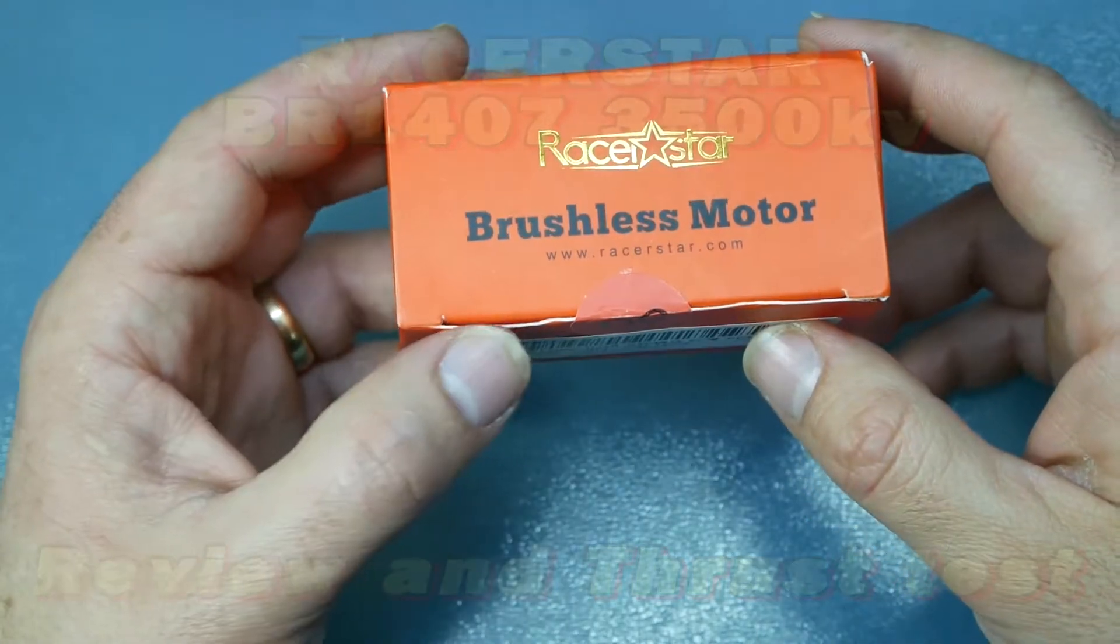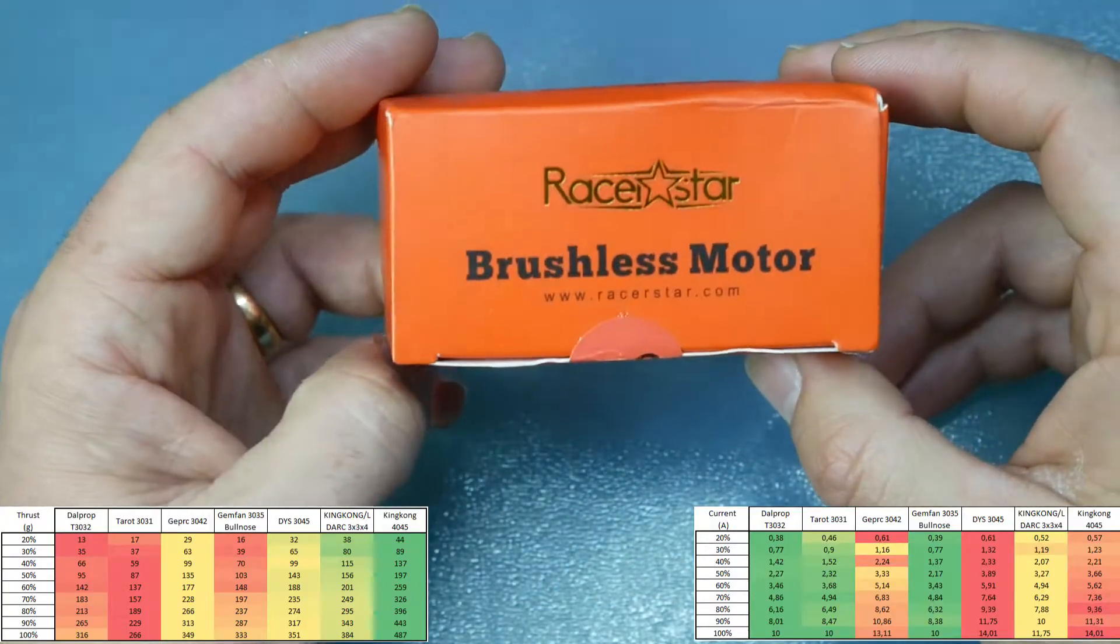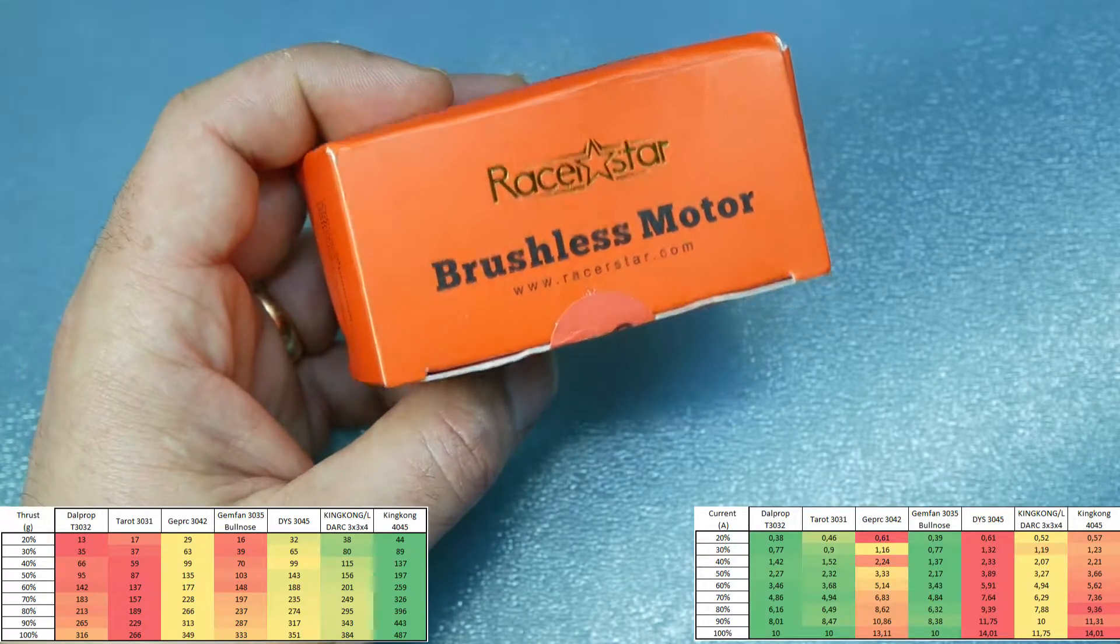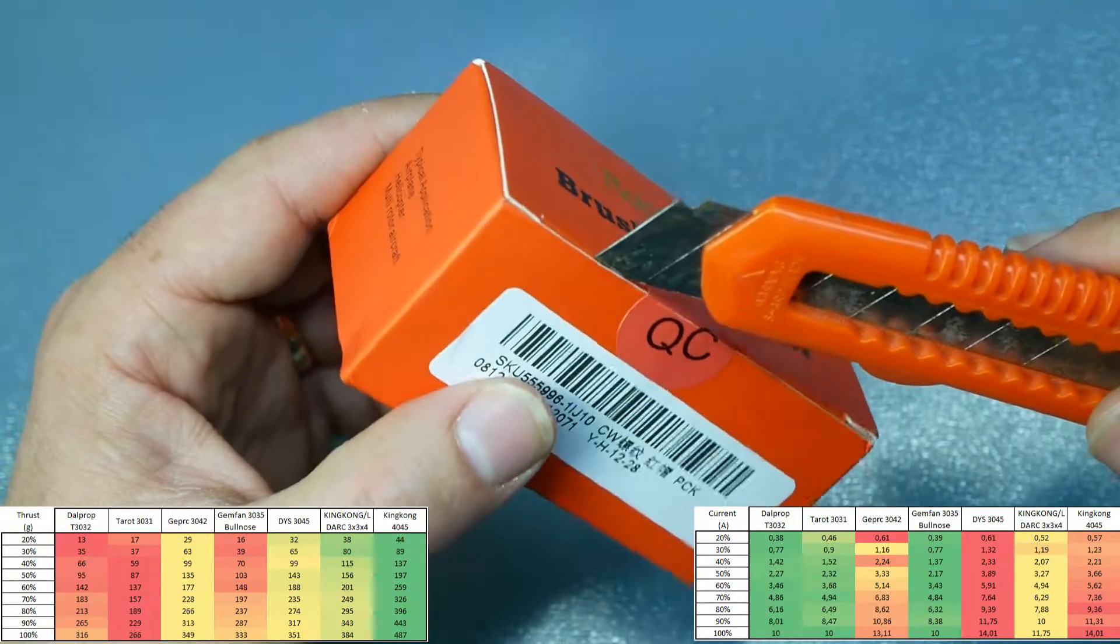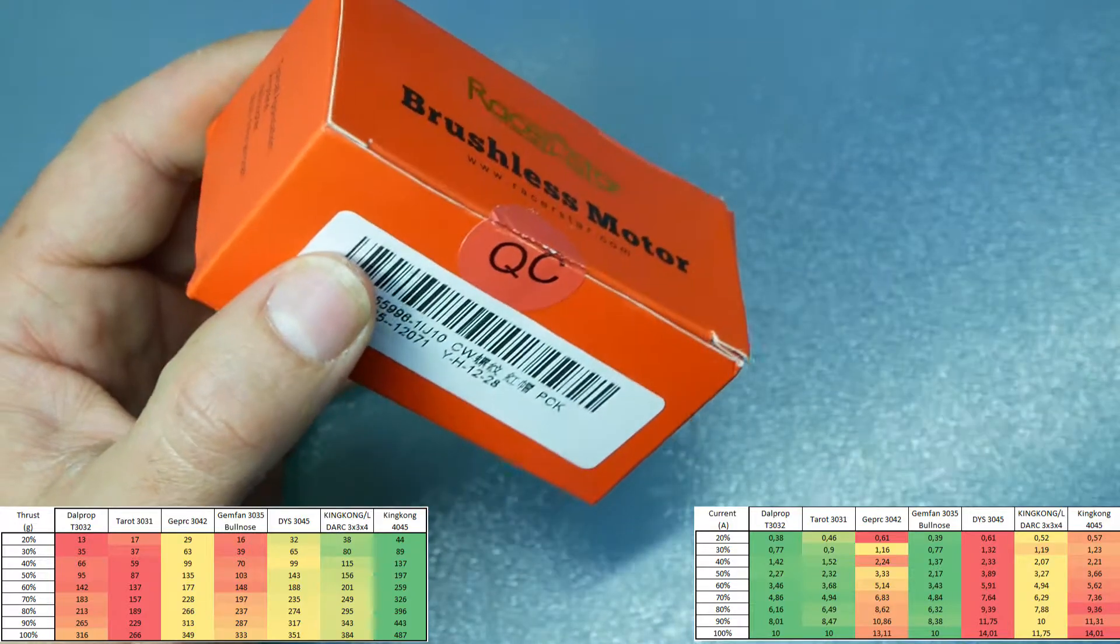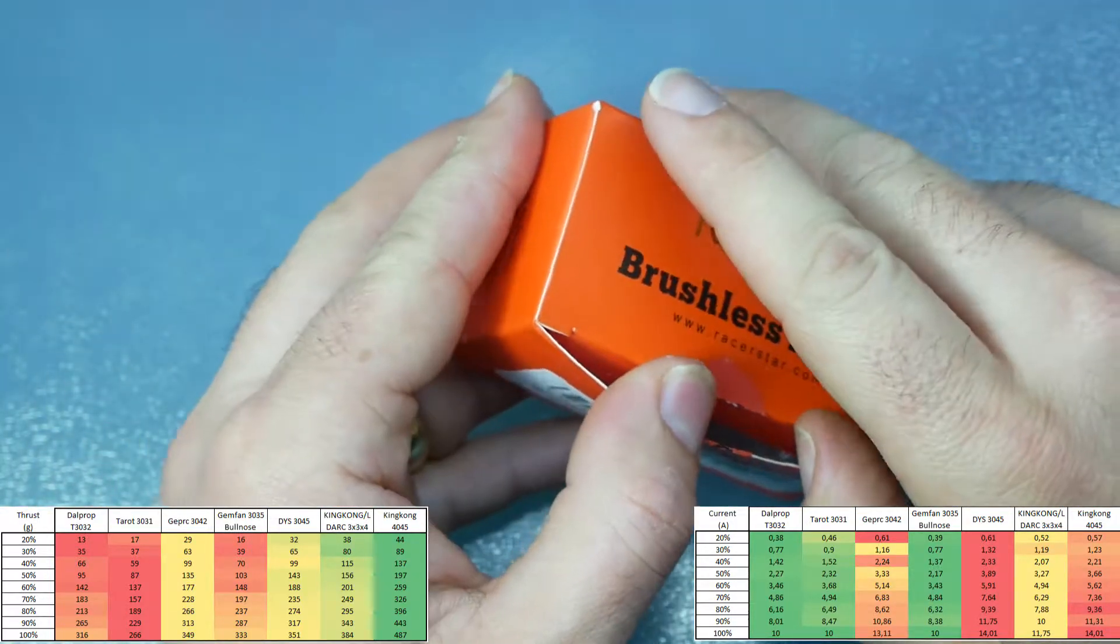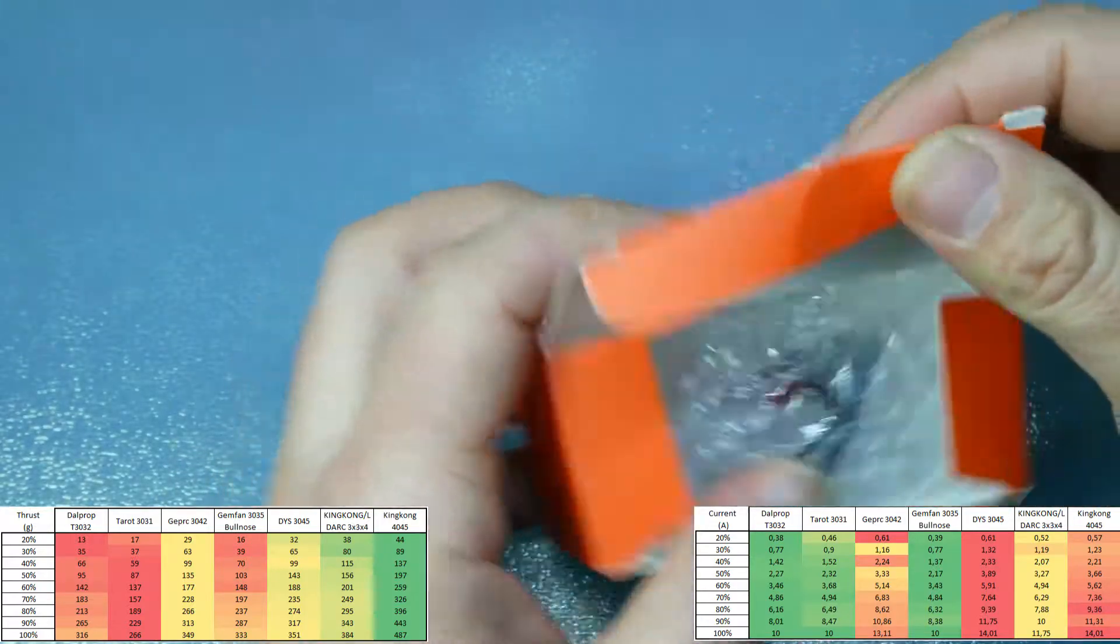Welcome to RCBestReviews. Today we bring you another review of a motor. This time it's a brushless motor from Racerstar. It is a 1407 3500KV motor.